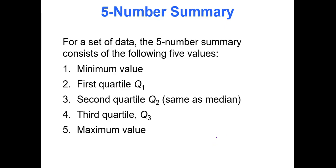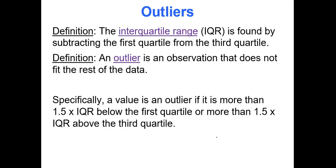For a data set, the five number summary consists of five values: minimum value, first quartile, second quartile, third quartile, and the maximum value. The interquartile range, also called the IQR, is found by subtracting quartile one from quartile three.